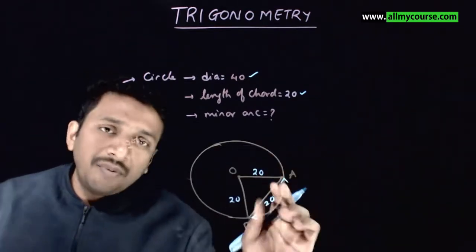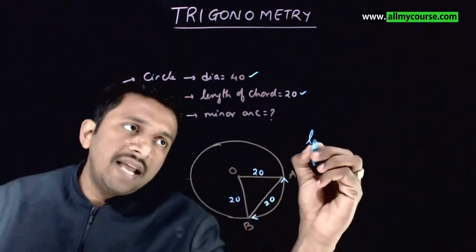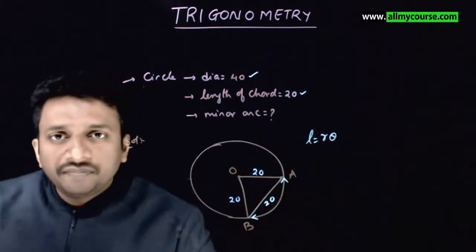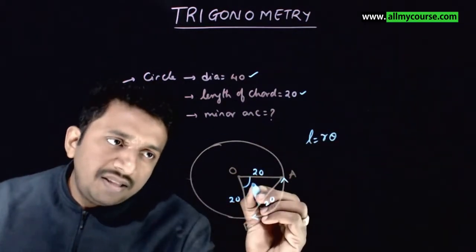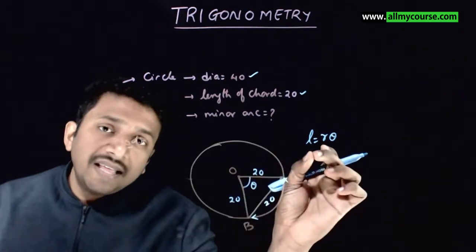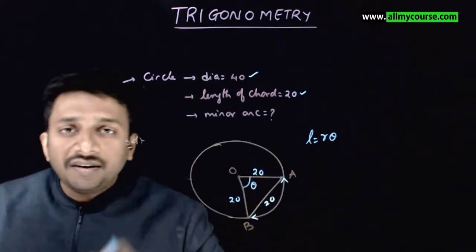So, we know a formula to calculate the length of the arc, which is L equals r theta. If the arc subtends an angle of theta at the center, then length will be equal to radius into theta in radians.